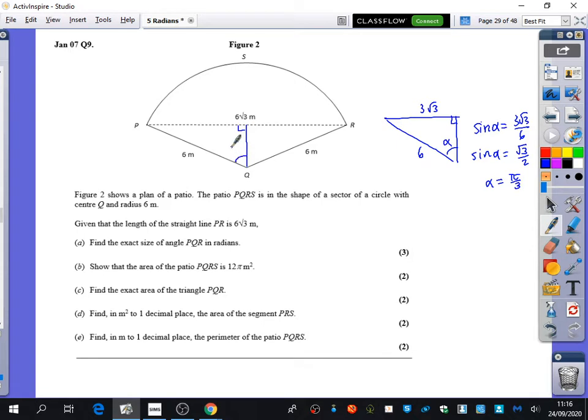So if this angle here is pi over three, obviously you could do this on the calculator but I want to push you to being the best mathematicians, so obviously this would be pi over three, so the exact angle of PQR is two pi over three.